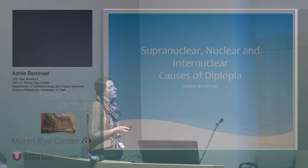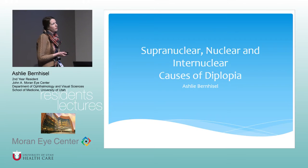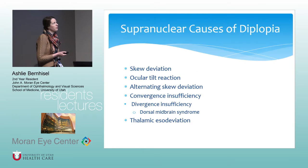I'm talking about the most afferent pathways, then we'll go to efferent pathways, and then Reese is going to talk about intermuscular issues. So I'm talking about supranuclear, nuclear, and intranuclear causes of diplopia.